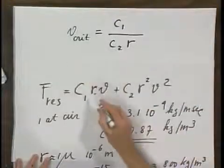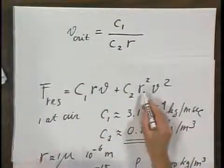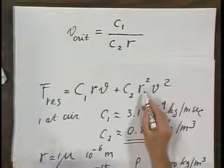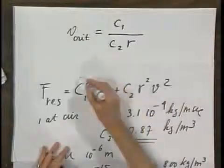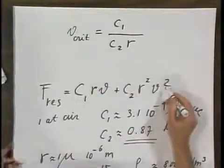That is the speed at which these two terms are equal. Don't confuse that with the terminal speed. It's a speed whereby this linear term has the same magnitude as this term in V squared.